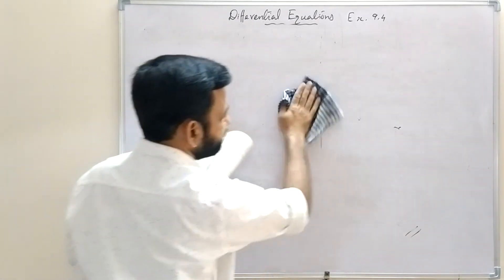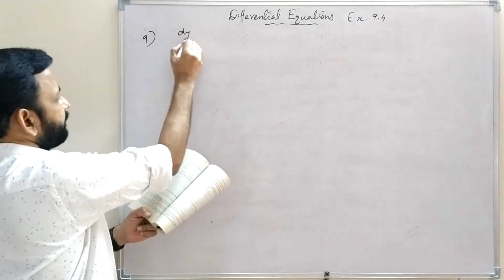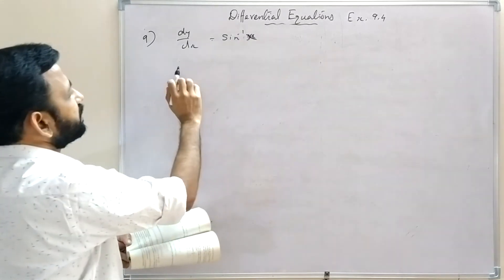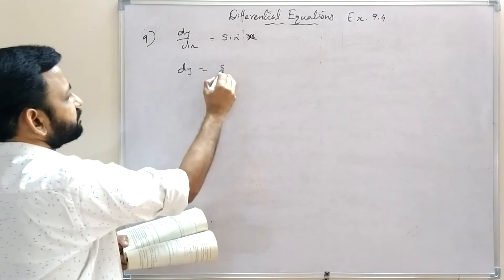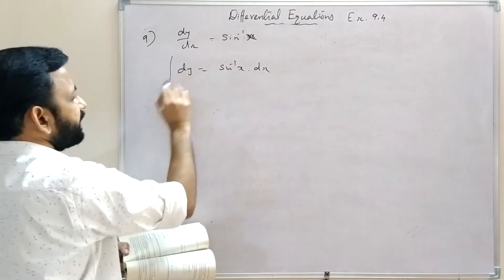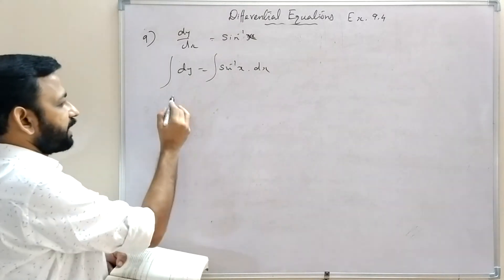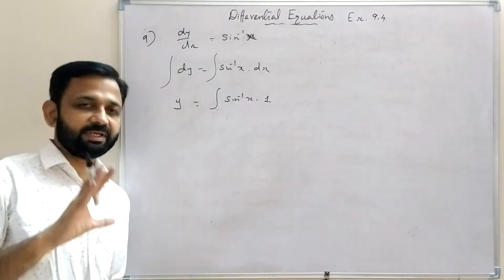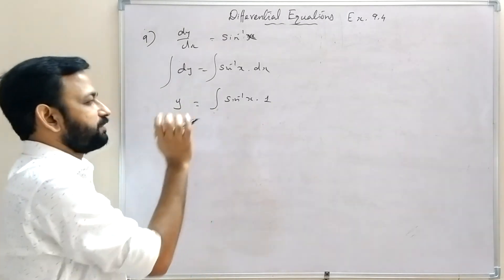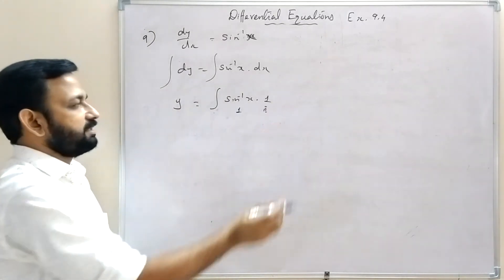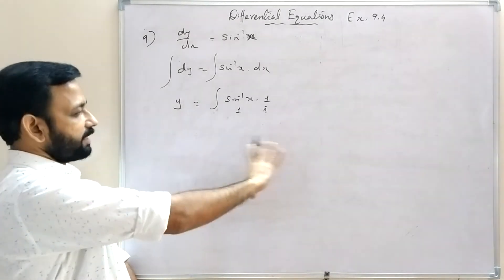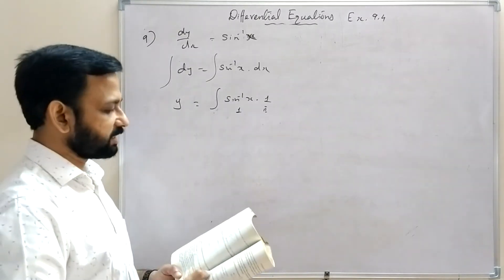Question 9: dy/dx = sin⁻¹x. So dy = sin⁻¹x dx. Integrating both sides: y = integral of sin⁻¹x · 1 dx, which we solve using integration by parts (first function times integral of second, minus integral of derivative of first times integral of second).